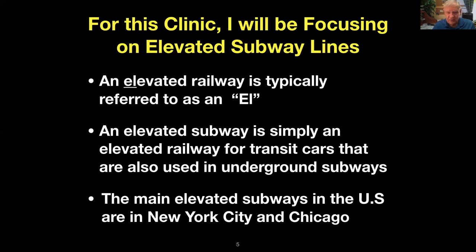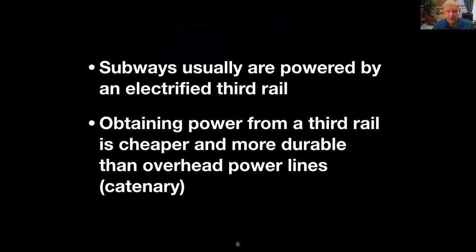An elevated railway is typically referred to as an L. It's simply an elevated railway for transit cars that could also be used for underground subways. The main elevated subways right now in the US are in New York City and Chicago, although Boston and some other cities also had elevated trains at some points — I think Boston got rid of theirs around '75 or '76. They're usually powered by an electrified third rail, which is a lot cheaper to construct and much more durable than overhead power lines like catenary.